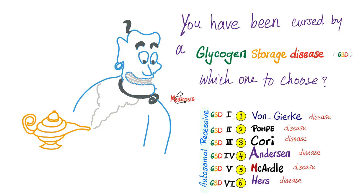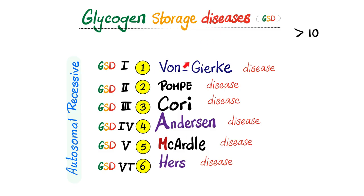If a genie cursed me with a glycogen storage disease, I'd choose Corey or type 3, because it's a mild disease. I would not choose type 4 or Anderson — that's evil and can lead to death early in childhood. There are about 15 or more glycogen storage diseases; these are the most important ones we'll discuss.